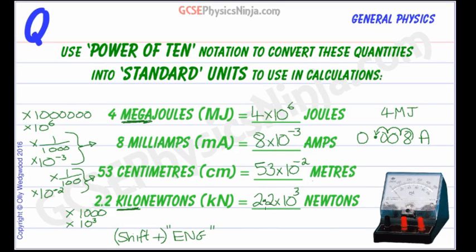And if we were to write this out in its proper form, in its normal form, it would be 2200 newtons. Because the decimal point has moved three places to the right. One, two, three.